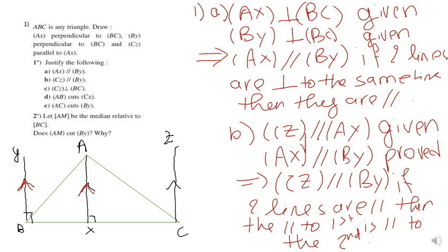I'm going to do the rest orally — you know how to write them, and you can check the full solution in the PDF. For part c: CZ is perpendicular to BC because CZ and AX are parallel, and if two parallel lines are perpendicular to the same line, then both are. For part d: AB cuts CZ because if two lines are parallel, a line intersecting the first also intersects the second — since BA intersects AX and AX is parallel to CZ.